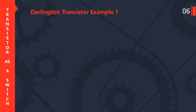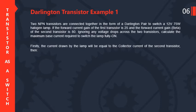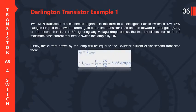As an example: two NPN transistors are connected in a Darlington pair to switch a 12V, 75W halogen lamp. The forward current gain of the first transistor is 25 and of the second transistor is 80. Ignoring any voltage drop across the two transistors, calculate the maximum base current required to switch the lamp fully on. The current drawn by the lamp equals the collector current of the second transistor, IC equals ILamp. So ILamp equals P divided by V, giving ILamp equals 75/12 equals 6.25A.